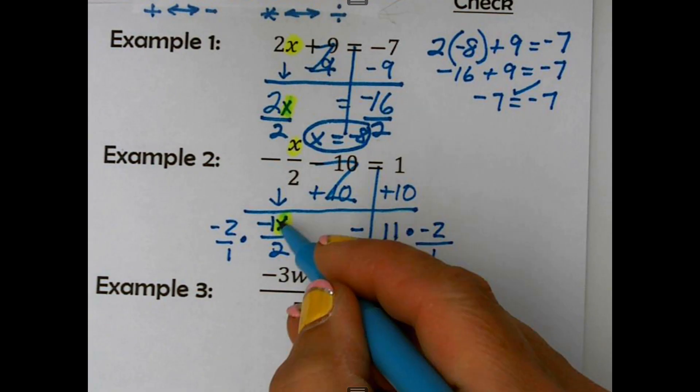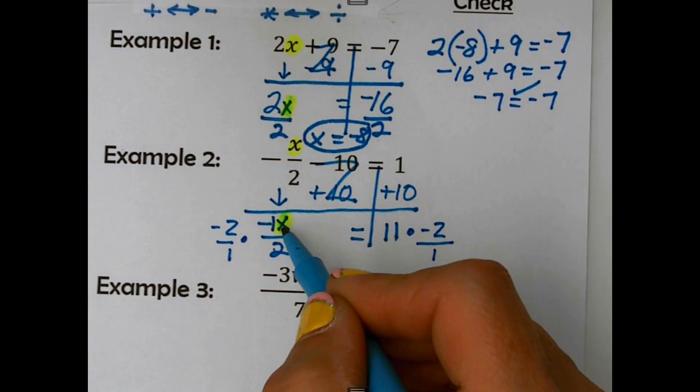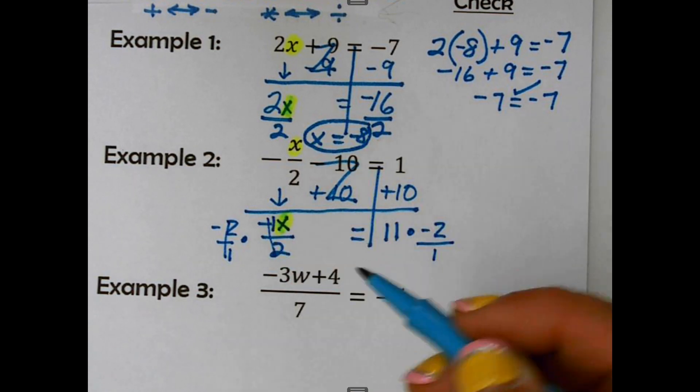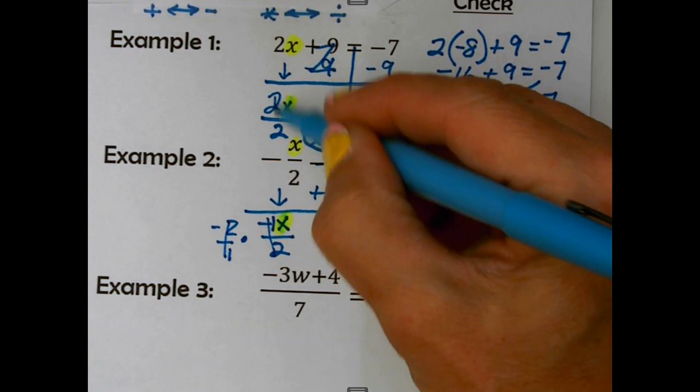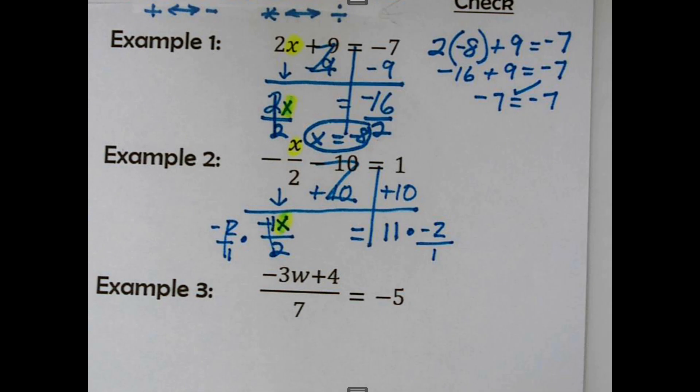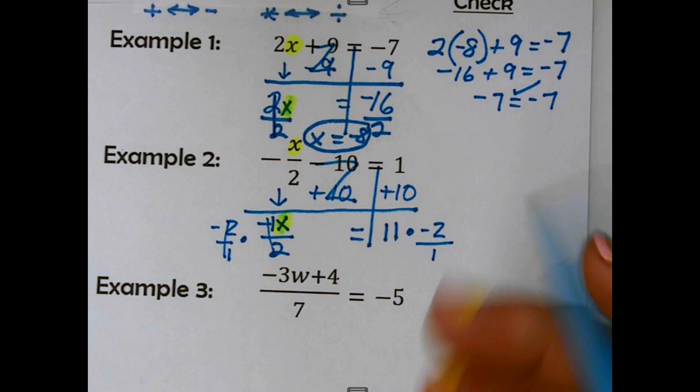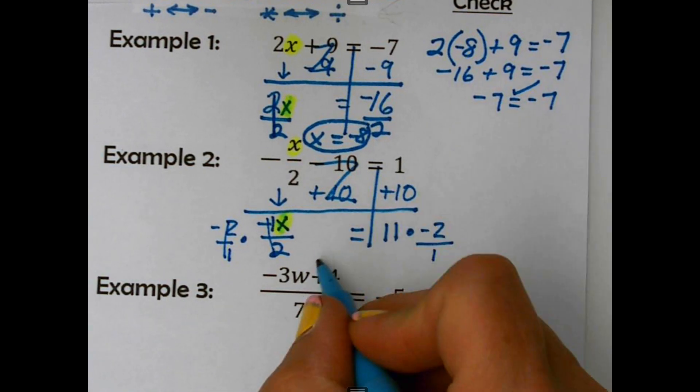2 divided by 2 is 1. Just back up and put that there. Remember, that's the goal is just to get it to be 1x. Just to see what 1x would be equivalent to. 11 times negative 2 is negative 22. We're going to circle it.